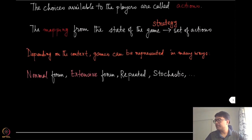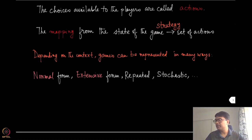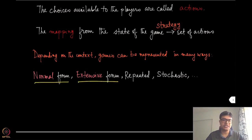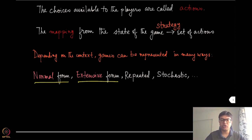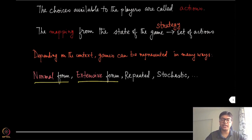Depending on the context, games can be represented in many ways. The two most common representations are called the normal form and extensive form representations. Normal form games are typically used for representing games that end in one round — all the players choose their actions or strategies and the game ends right after that.